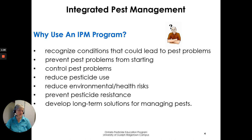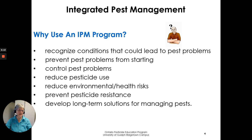So why would you want to use an IPM program overall? You're looking at your whole agricultural cropping system. You want to recognize conditions that could lead to pest problems, prevent pest problems from starting, and once they do start, have an action plan in place for controlling them. By doing that, you may possibly reduce your pesticide use, and therefore reduce environmental and health risks. Also a big issue in Ontario is pesticide resistance — some pests will no longer be controlled by pesticides, so we need to slow that resistance down.